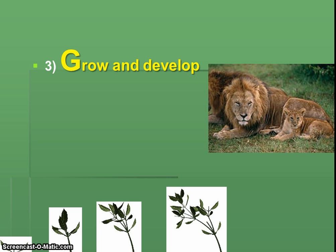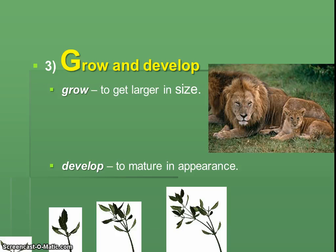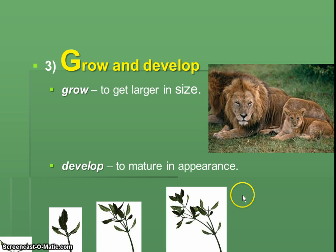All living things grow and develop — even you. You grow, you get larger; you're doing it every day whether or not you want to. But organisms also develop, meaning they mature. For instance, let's say this is a male baby lion — what's a way it will mature in appearance? It'll get a mane. The difference between these two is one's just getting bigger and one's changing and getting mature. If you like this example, write it down: just getting bigger versus growing a mane.